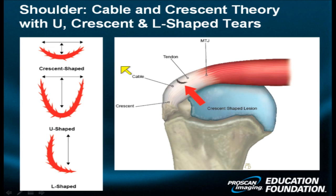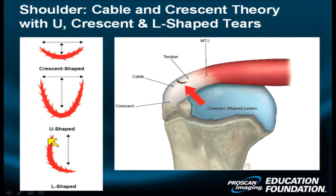Occasionally the tear will only affect one part of the cuff — either the far anterior or the far posterior part. When you look from the top down, the shape of the tear will appear as an L or as a reverse L.